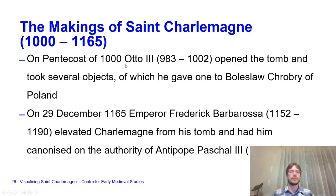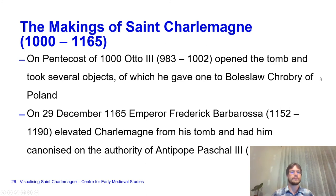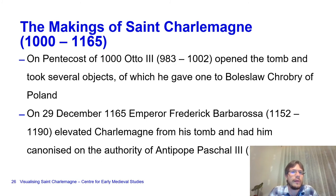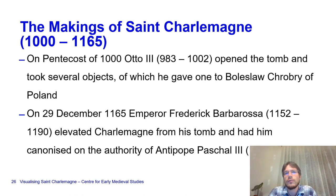In the year 1000, Otto III, a German king and Roman emperor, arrived for Pentecost, opened the tomb of Charlemagne, and took several objects out, giving one—supposedly a golden throne—to Boleslav the Brave of Poland. We are not sure exactly what Otto III's plans were, but the important thing to remember is that when Frederick Barbarossa later intervened in the cult of Saint Charlemagne, this was already precedented.